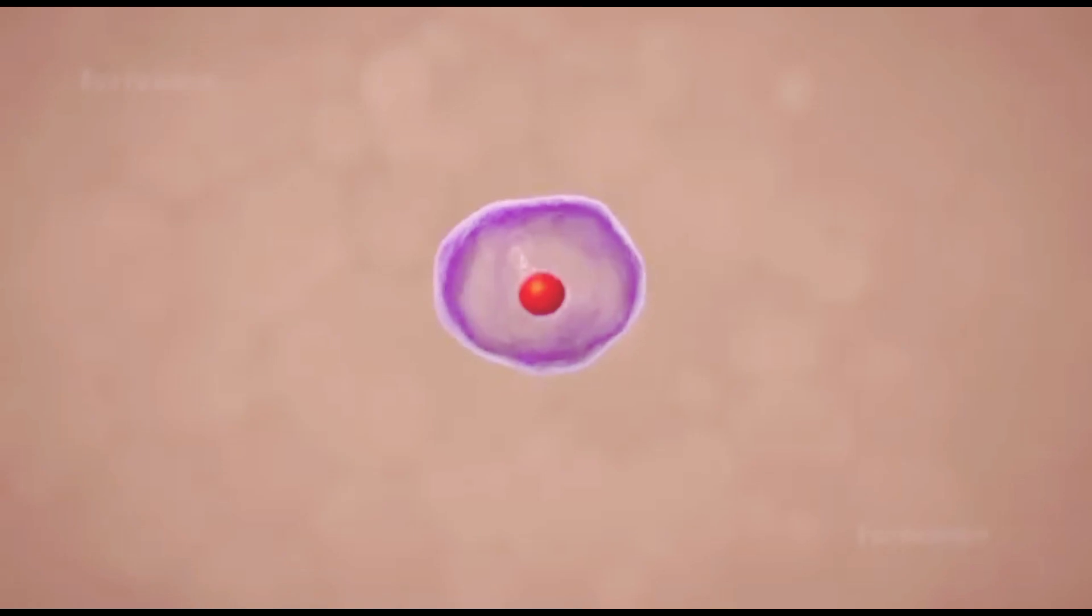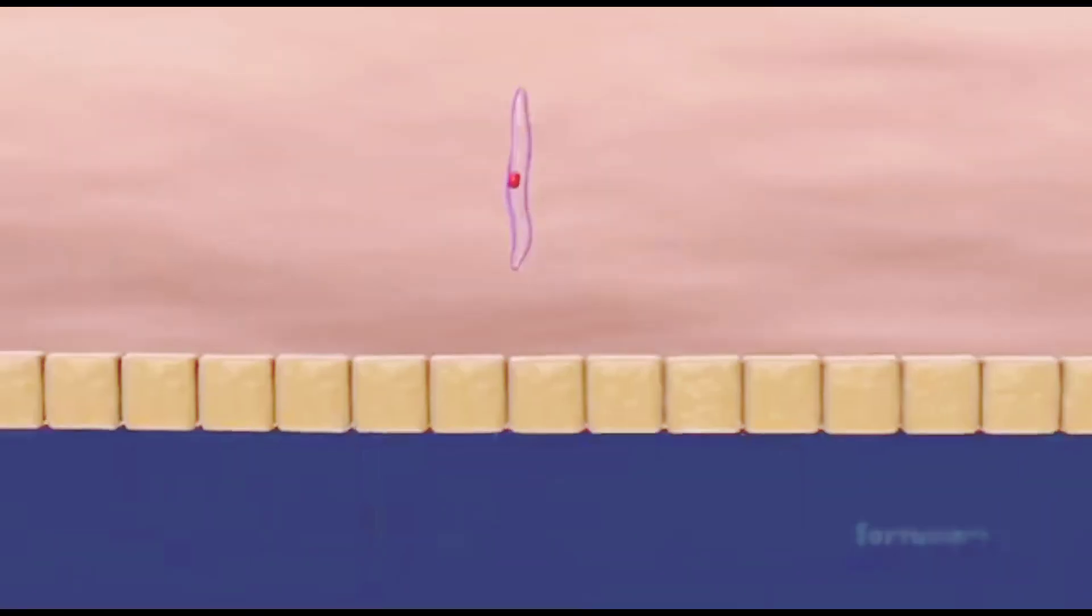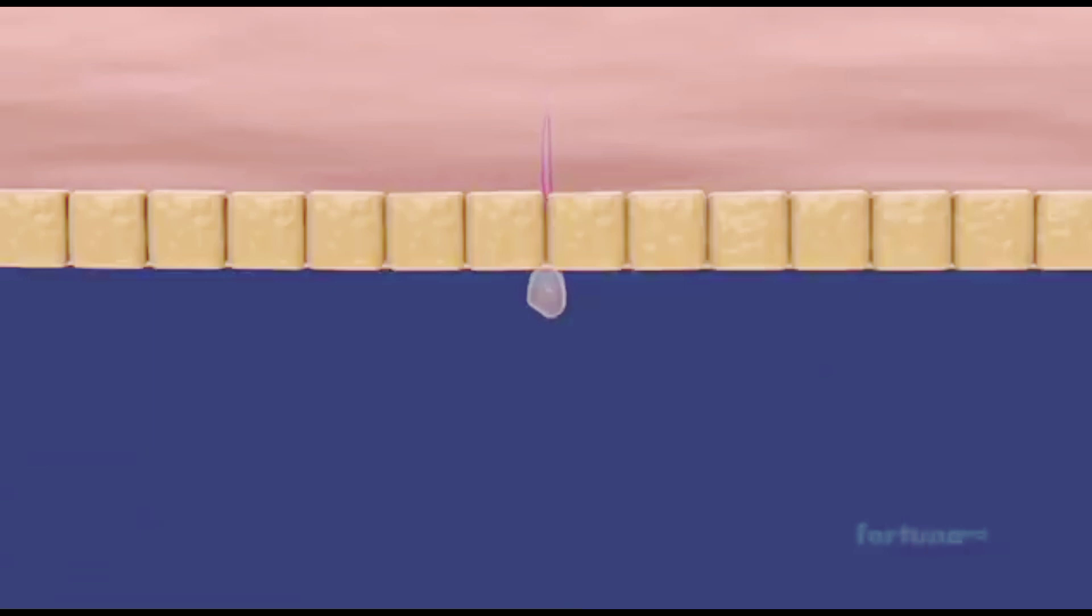The spherical zygote will soon develop into an elongated, worm-like ookinete. The ookinete will penetrate the stomach wall and reach the outer surface, where a cyst known as an oocyst will form.